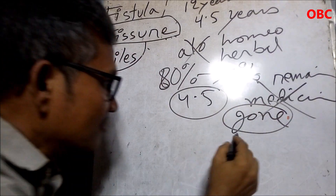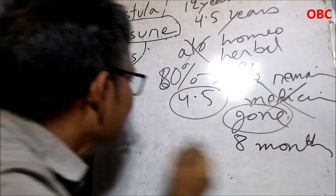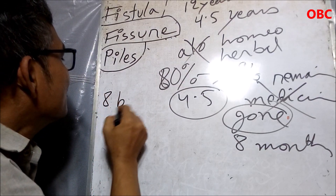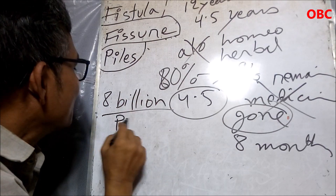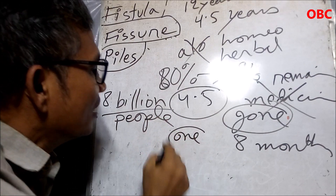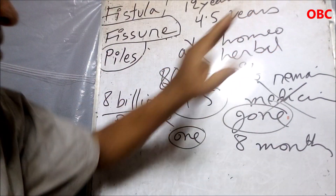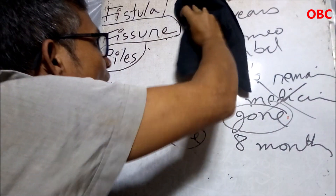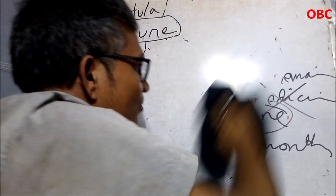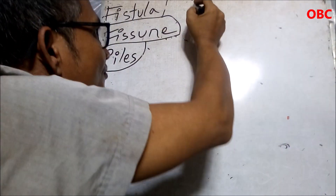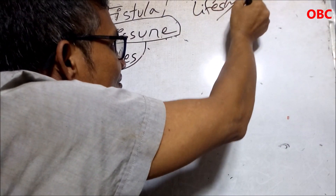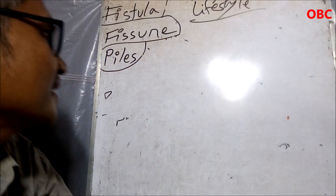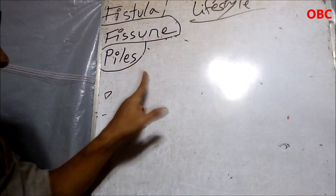After four and a half years, I stopped medicine and my fistula is gone. I recovered from this about eight months ago. I believe I may be the only person who, without operation, got rid of fistula. That's why I am trying to help you. I solved my problem because I followed a lifestyle. If you maintain a proper lifestyle, fistula will automatically go away and all other diseases will leave you.